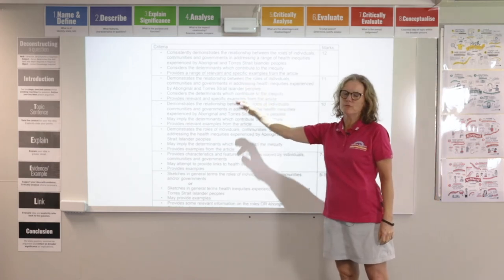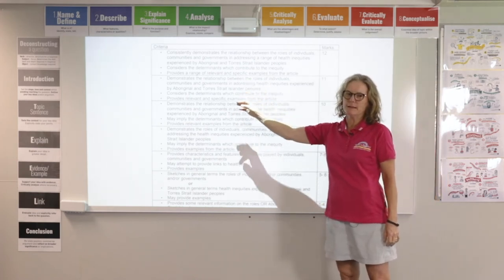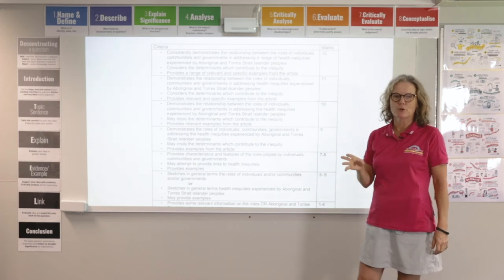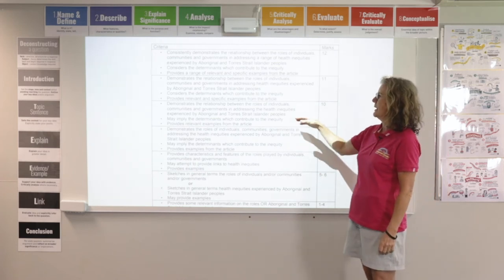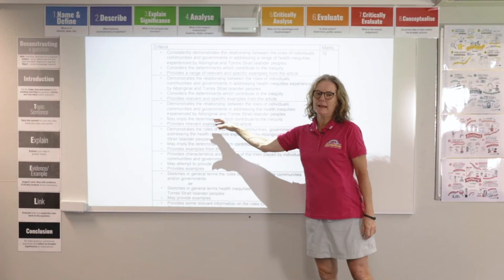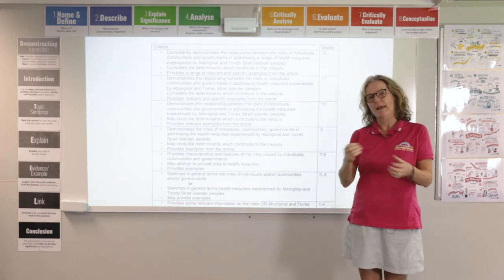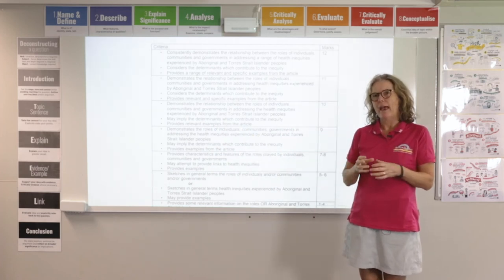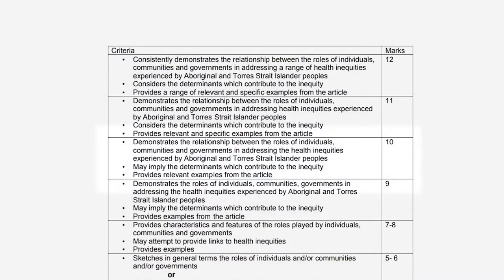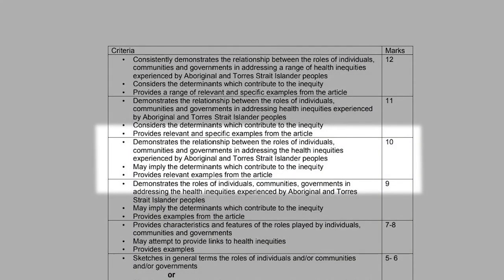All these top bands need really specific examples from the article, so make sure you've got those. Looking a bit further down, if you can't really get the determinants — if you're not making it clear how the determinants are engaged in that process — then you'll be down in that 10-mark range, with even less clarity in the band below that.